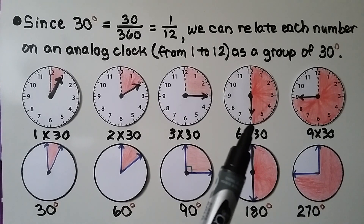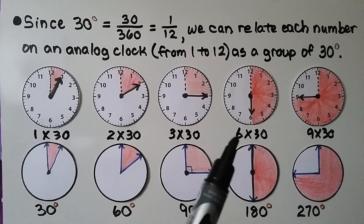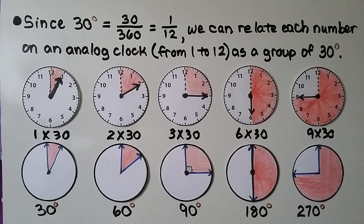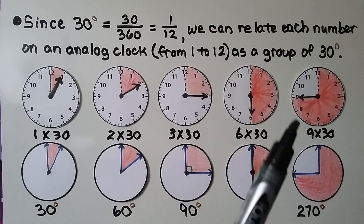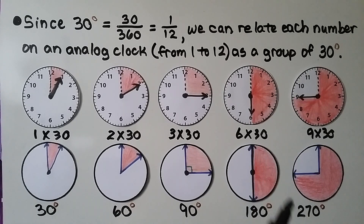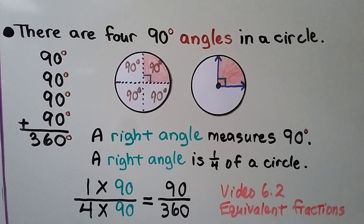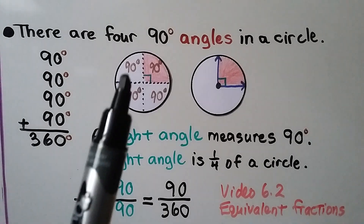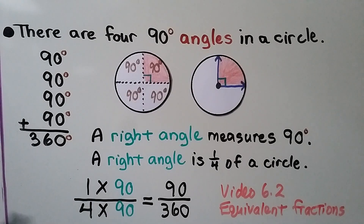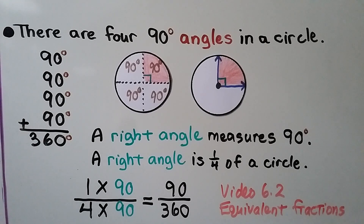When the minute hand is pointing to the 6, that is 6 times 30, that's 180 degrees. When the minute hand is pointing to the 9, that's 9 times 30, that's 270 degrees. There are four 90 degree angles in a circle, and if we add 90 plus 90 plus 90 plus 90, or do 4 times 90, it's equal to 360 degrees.